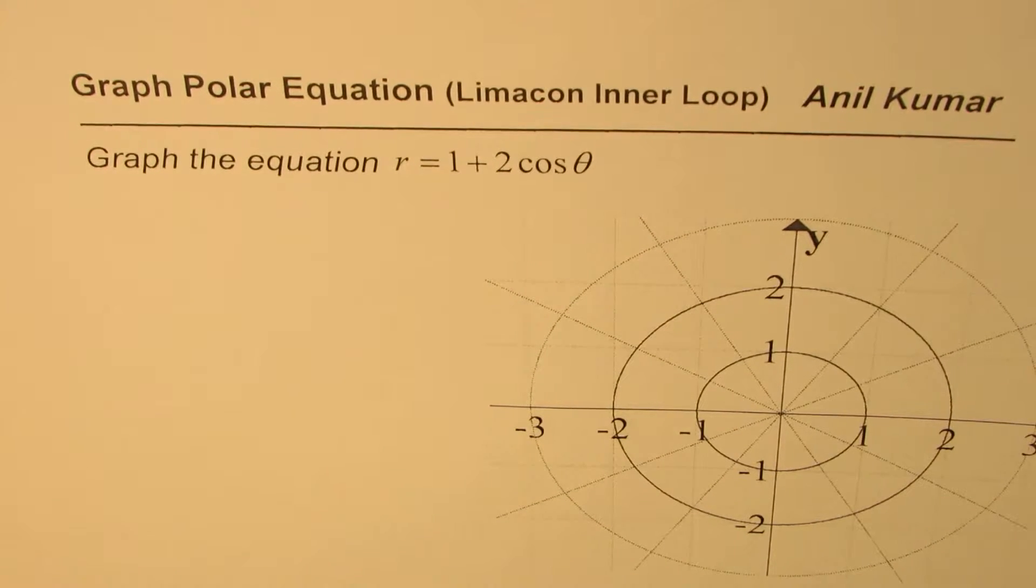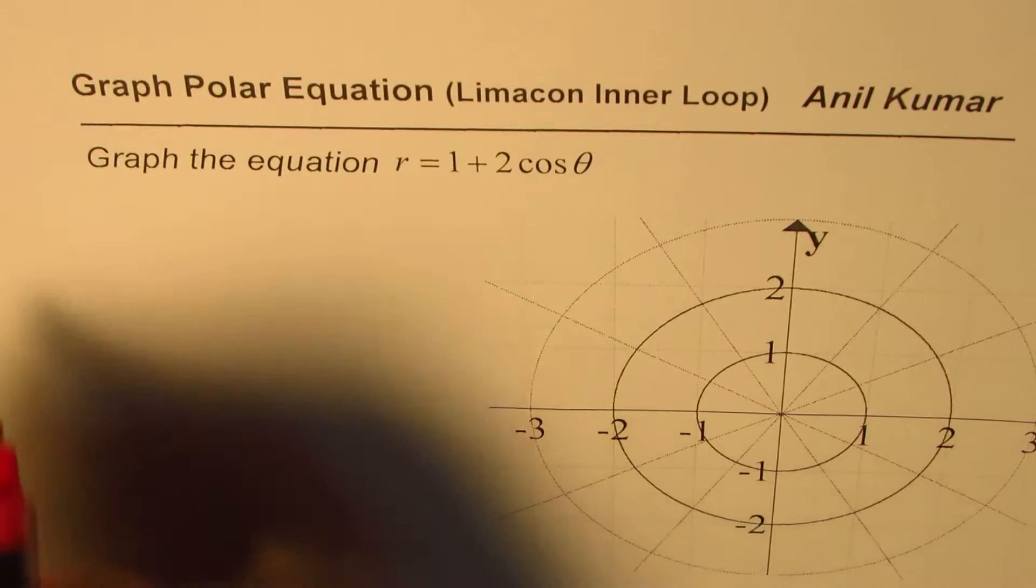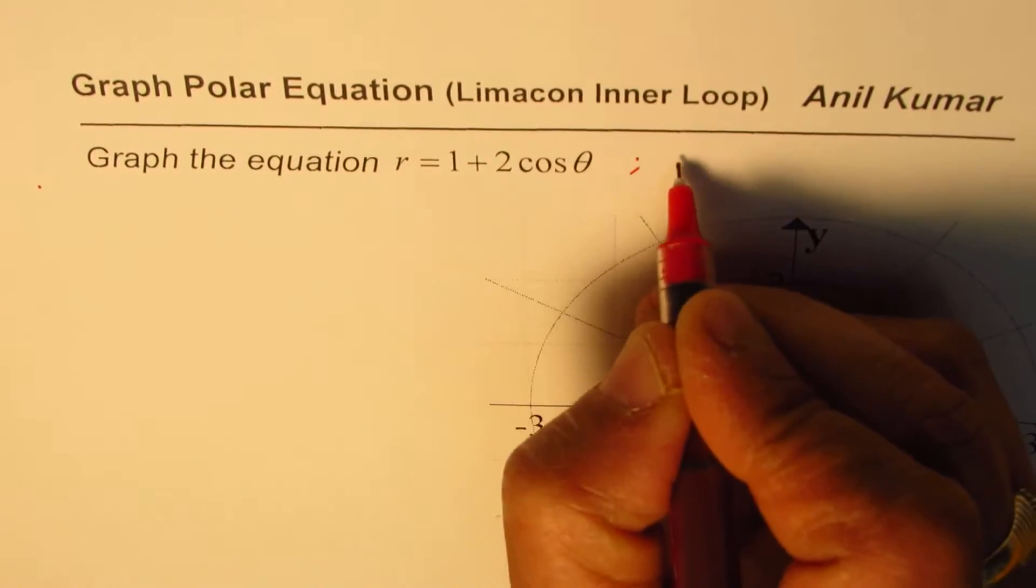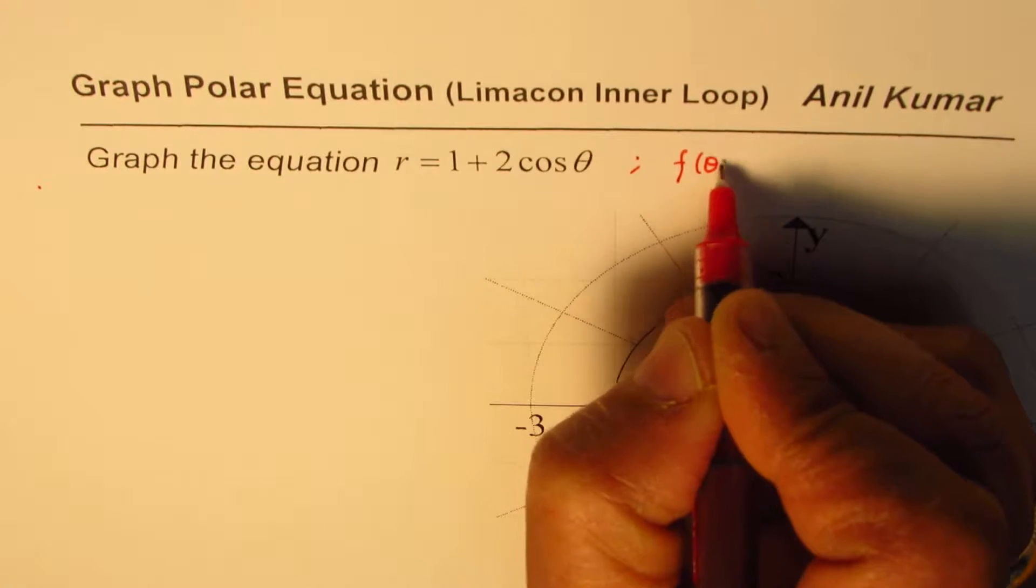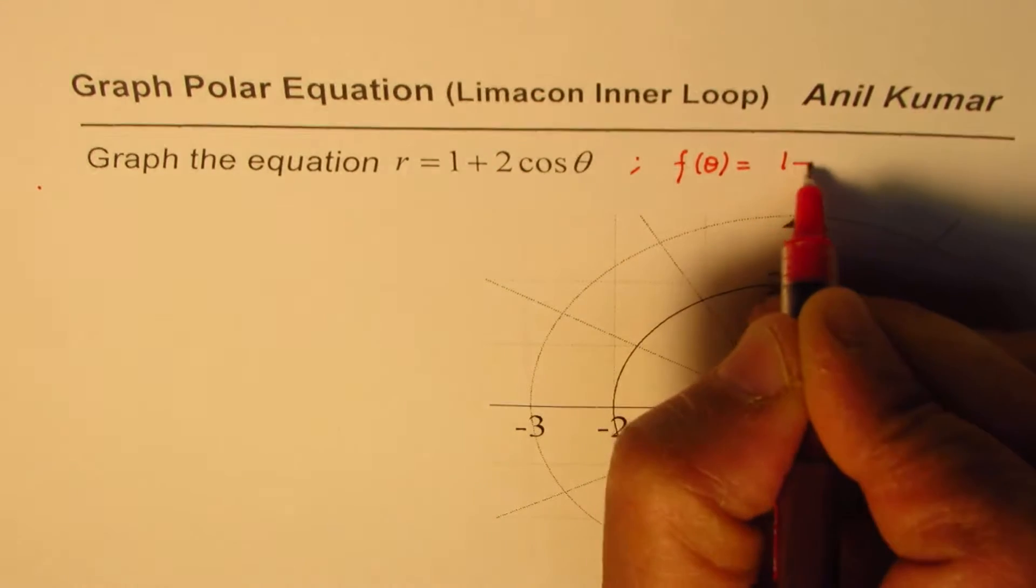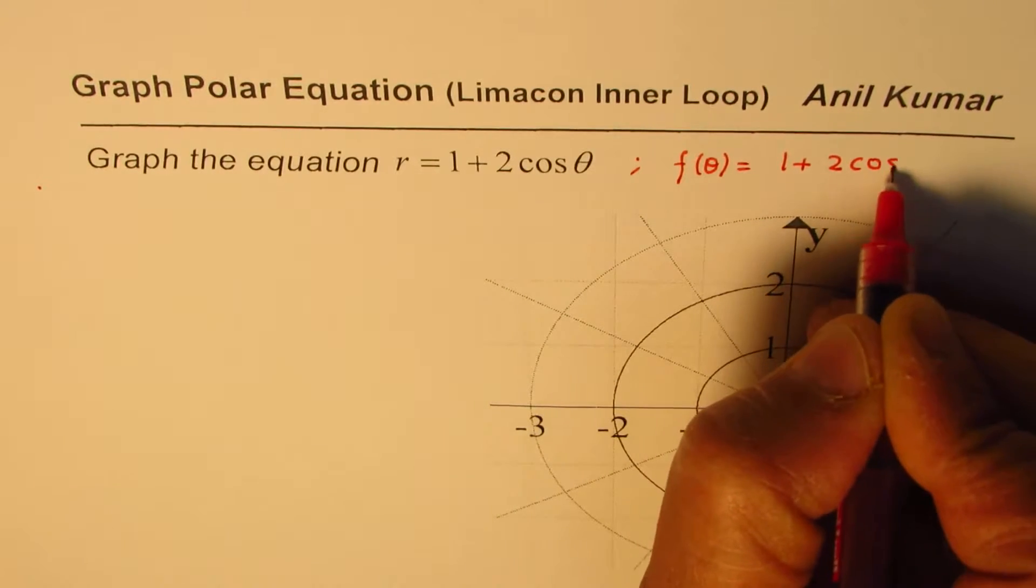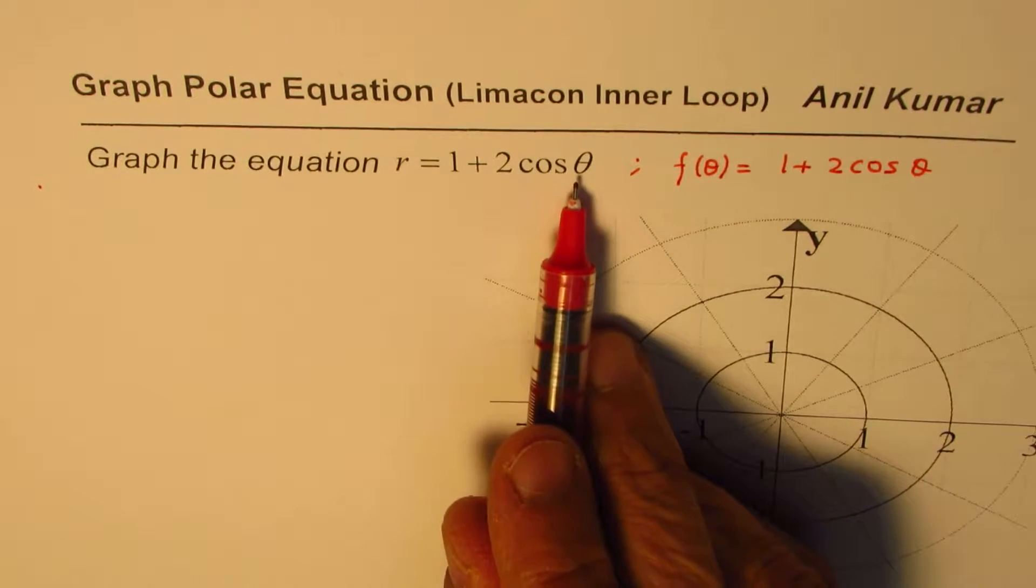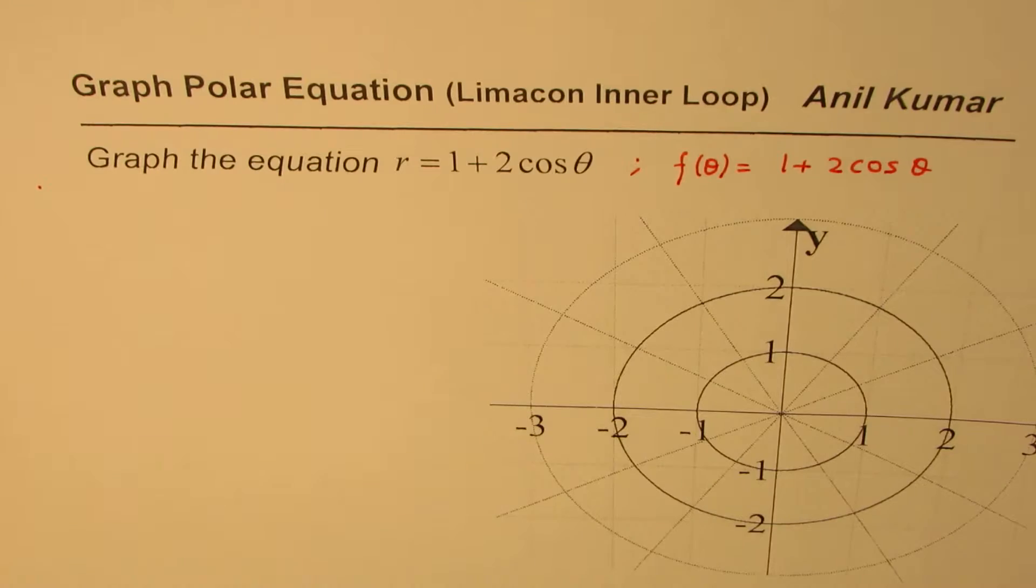We'll see what inner loop is. To begin with, we should always check the symmetry. So first, I prefer to write the equation in the function form, which is f of theta equals 1 plus 2 cos theta. So r is f of theta, which is a function of theta. That is how we can write it.